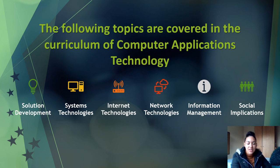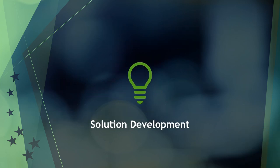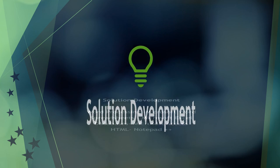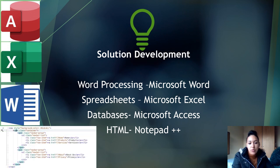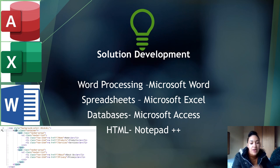Here are the different topics that get covered in the CAT curriculum. In solution development, we deal with the office applications used in CAT — Microsoft Word, Microsoft Excel, Microsoft Access — and we also make use of HTML coding. We look at advanced features of these applications, creating formulas and functions in Excel, creating and updating databases in Microsoft Access, and also creating web pages in HTML.